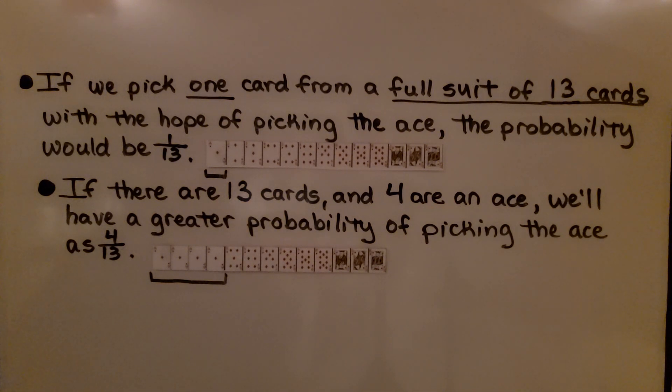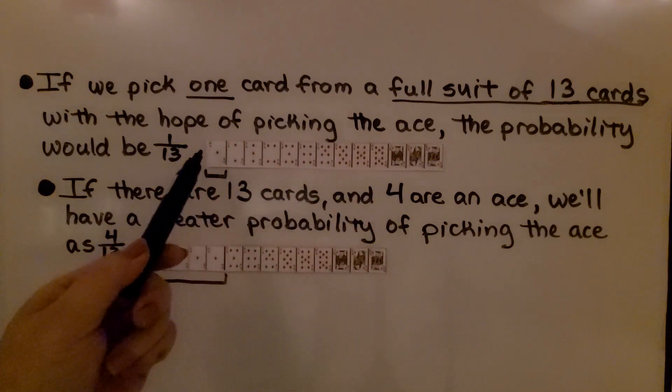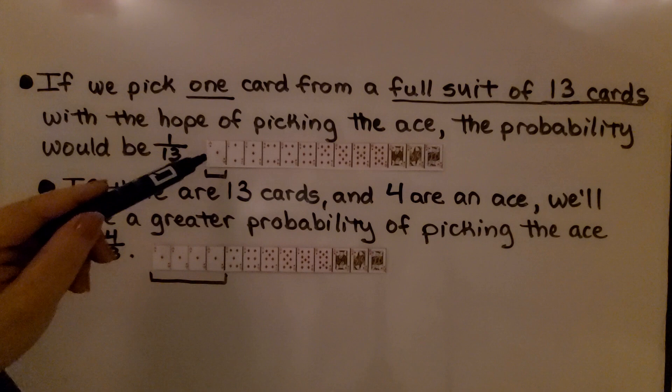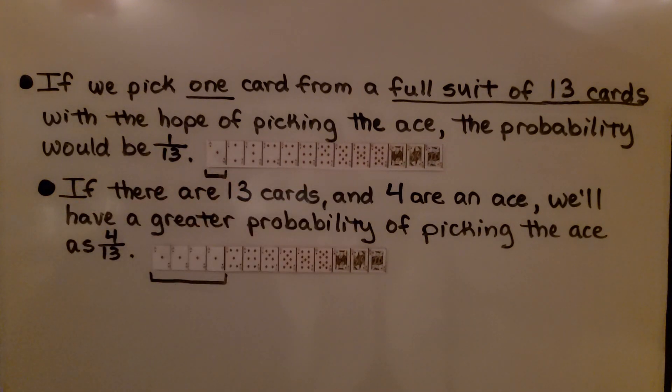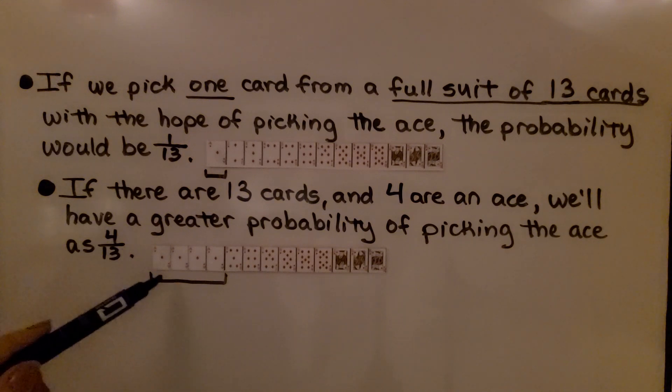If we pick one card from a full suit of 13 cards, so let's say we had all the diamond cards, and we pick one with the hope of picking the ace, the probability would be 1/13. There's 1 ace, there's 13 cards. Well, if there are 13 cards and 4 are an ace, we'll have a greater probability of picking the ace as 4/13.